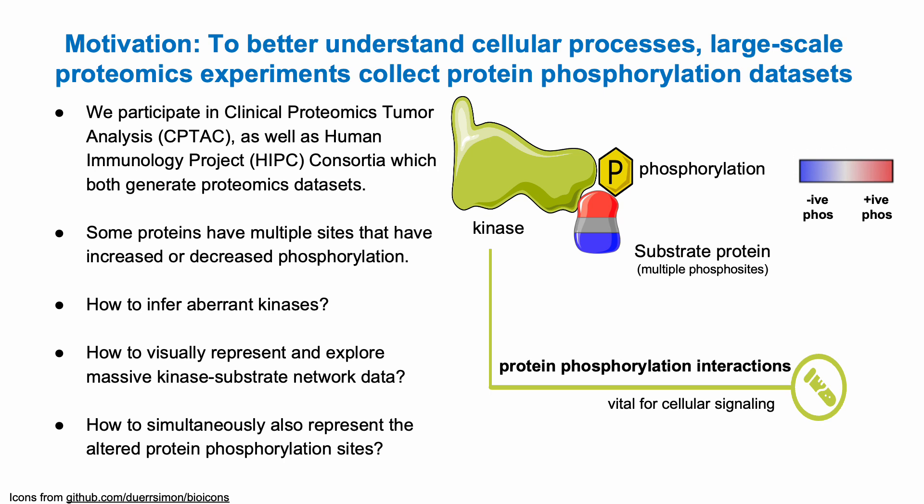So the question, one question that we want to answer is how do we infer aberrant kinases? And then once we infer this kinase protein, we want to visually represent and explore the interaction networks of these kinase substrate networks. Here we just depict one protein, one kinase interaction. But as you can imagine, from a massive omics dataset, we have many such interactions. And the other thing is, in some proteins, the phosphorylation site is increased or decreased, so we have multiple phosphorylation sites. So one question is how do we simultaneously also represent the altered protein phosphorylation sites, all in one visualization tool?